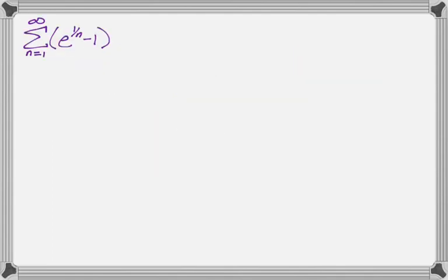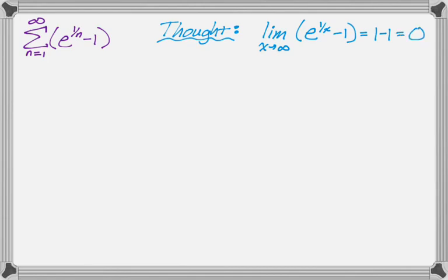So my first thought is maybe use the nth term test for divergence. So my thought was, let's try to take the limit. So I'm using x here because of something that I'm going to do in a little bit. So my thought is to find this limit but e to the 1 over, so 1 over x goes to 0 as x goes to infinity, which means e to the 1 over x goes to e to the 0, which is 1, so this actually just goes to 1 minus 1, which is 0.